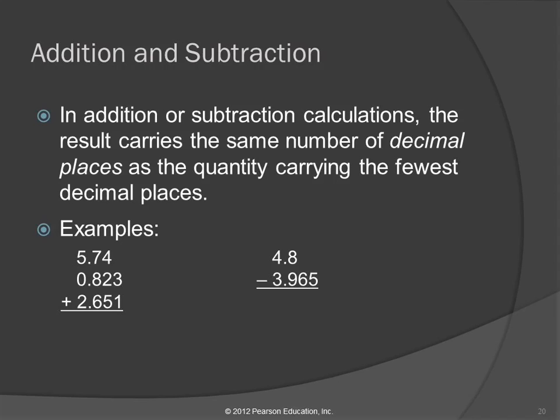In addition or subtraction, the result carries the same number of decimal places as the quantity carrying the fewest decimal places. Let's look at this example: 5.74, 0.823, 2.651. We're going to add those numbers together. All measurements have uncertainty. Where is the uncertain digit in a measurement? It's the last digit. The last digit is always uncertain.